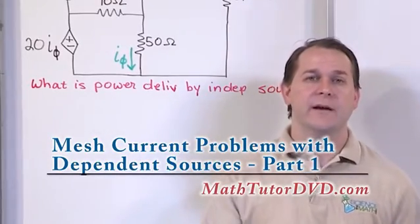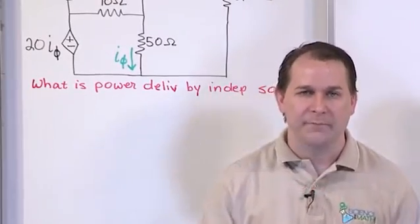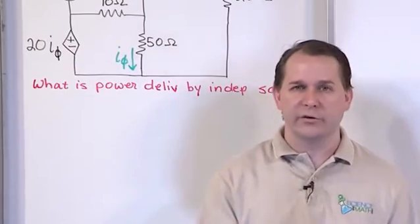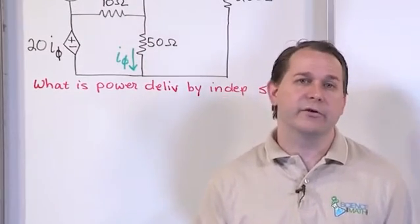Specifically, we're going to introduce dependent sources - a voltage source or a current source that depends on another voltage or current existing in the circuit.